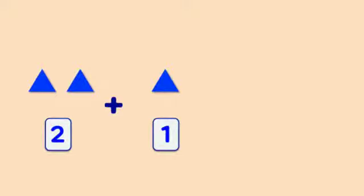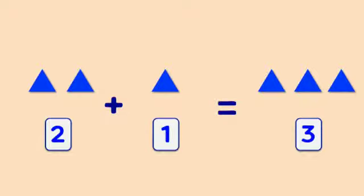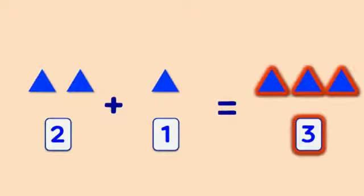One, two. Two triangles plus one triangle equals how many triangles? Count all together. One, two, three. There are three triangles. Two plus one equals three.